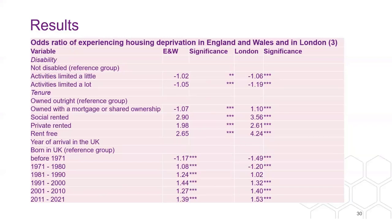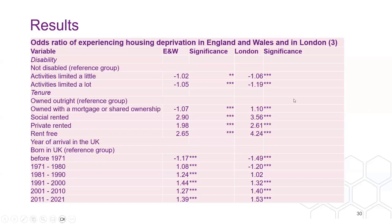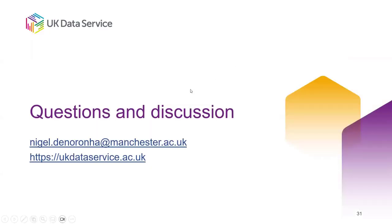Looking at tenure, you can see what you might expect: for social renting, much more likely to be housing-deprived. Not quite so much in the private rented sector, but also much more likely when people are living rent-free. And you can see a similar pattern around year of arrival.